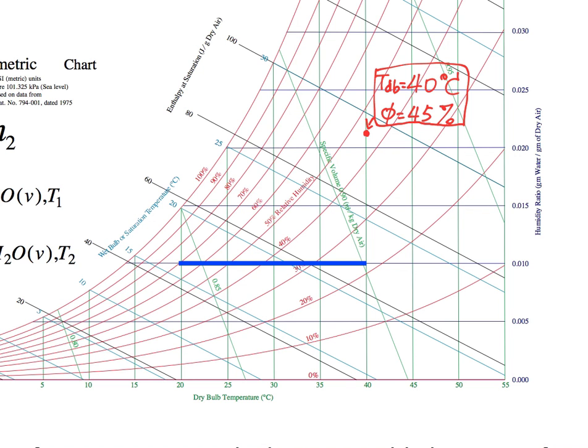So I will draw, I know that a constant humidity ratio process would appear as a horizontal line segment on the psychrometric chart. So I draw a horizontal line to the left.